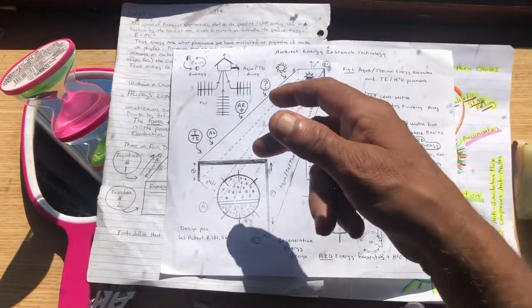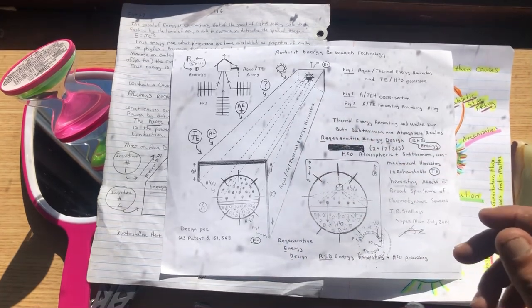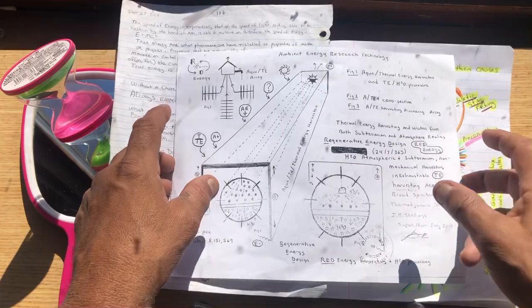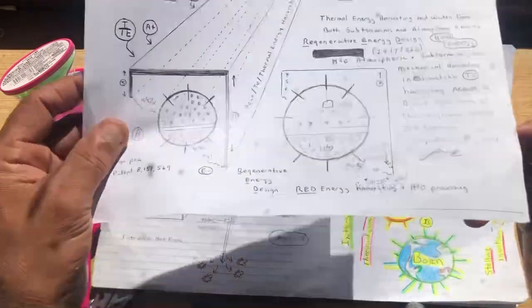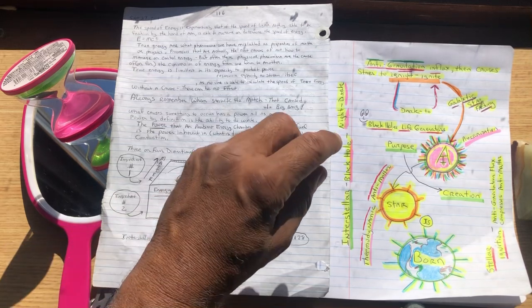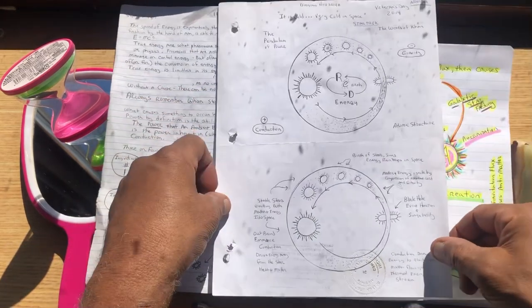This is the modern infrastructure you will use to unleash star-like thermodynamic power on Earth using red energy, regenerative energy design.